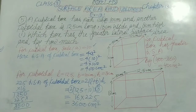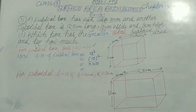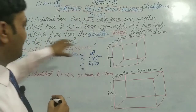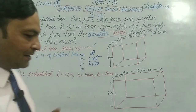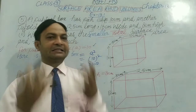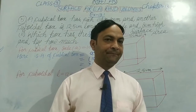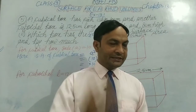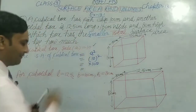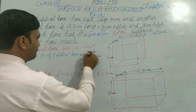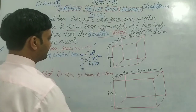Now we are doing the second part. In the second part, we need to find which box has smaller total surface area and by how much. First part was about LSA, and this part is about TSA. For the cubical box, TSA = 6a² = 6 × 100 = 600 cm square.